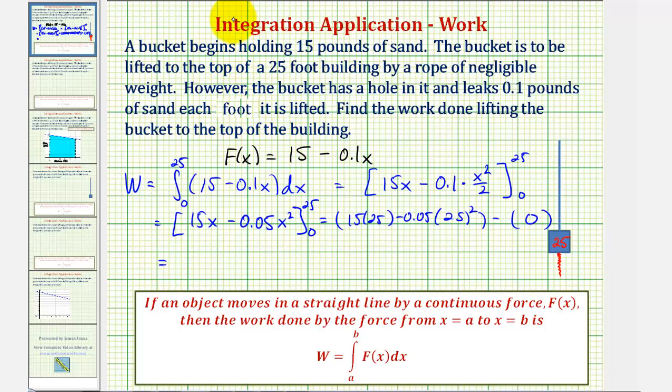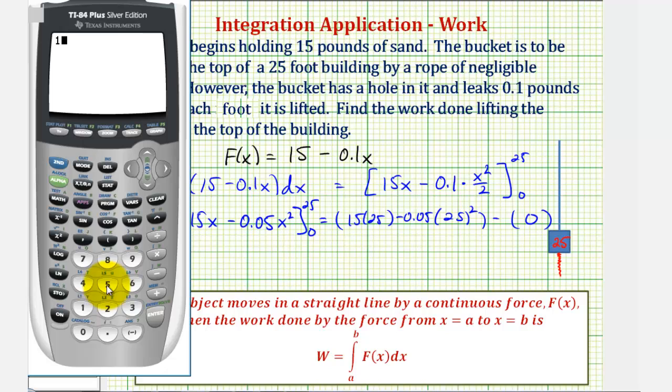So now we'll grab the calculator. We have 15 times 25 minus 0.05 times 25 squared. This gives us 343.75 foot pounds, which is the amount of work required to lift the bucket to the top of the building.